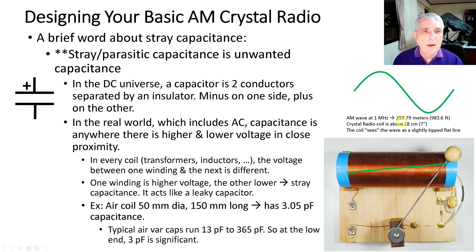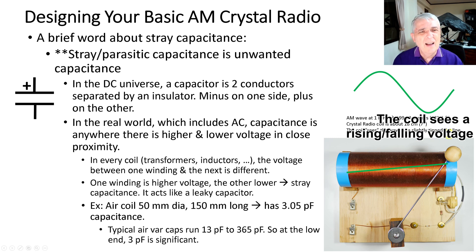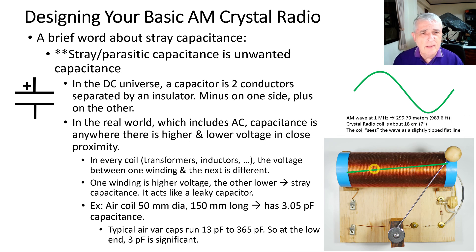If we look at an AM wave coming in at 1 MHz, it is about 300 meters or about 983 feet long — a very long wave. The crystal radio coil is about 18 cm or seven inches long, so the coil sees the wave as just a nearly flat line tipped up a little bit. In this case the voltage is rising, and if you look at each turn of wire, the voltage is increasing a tiny bit from one turn to the next.